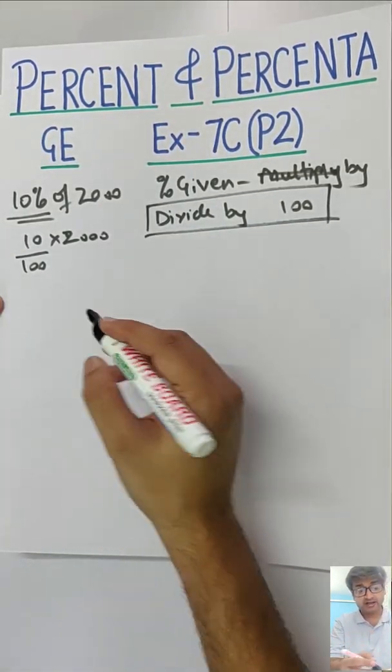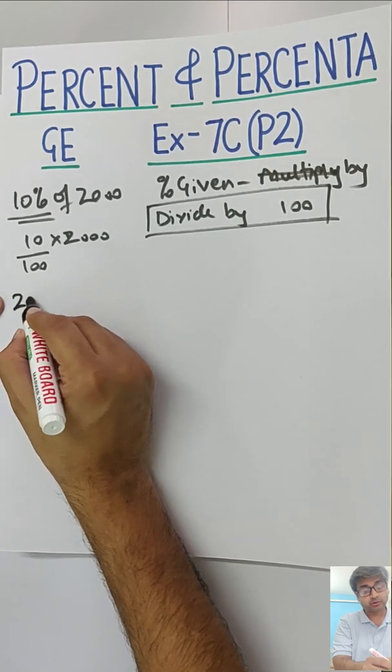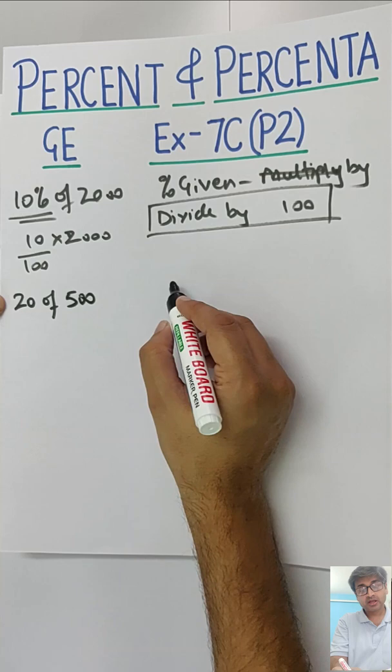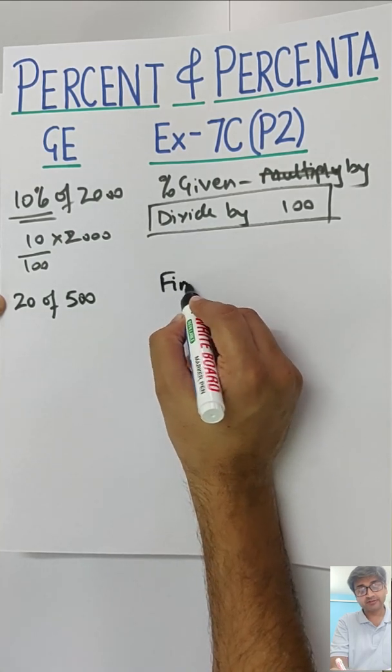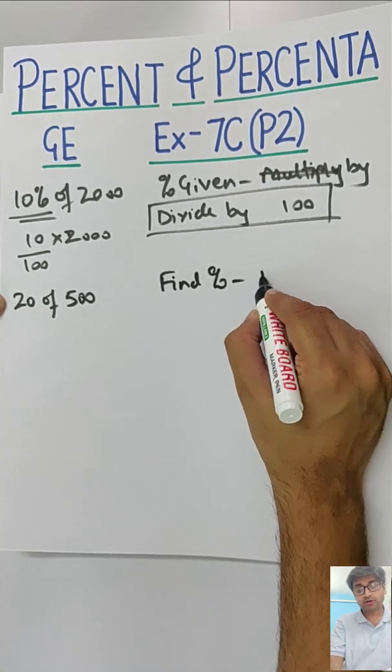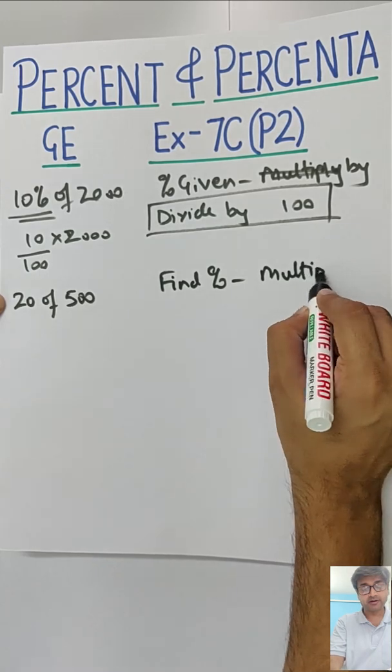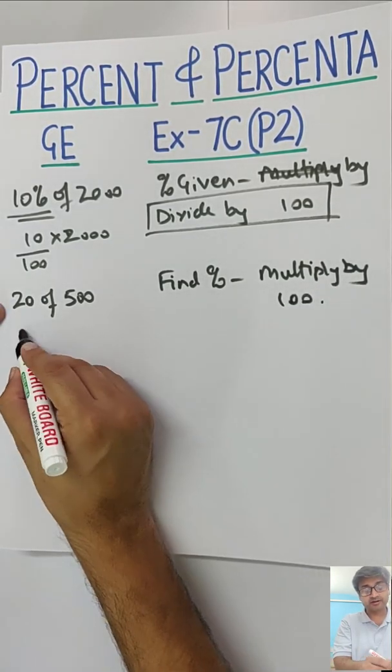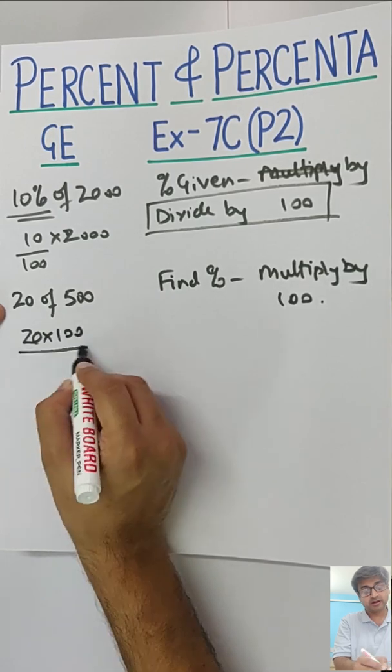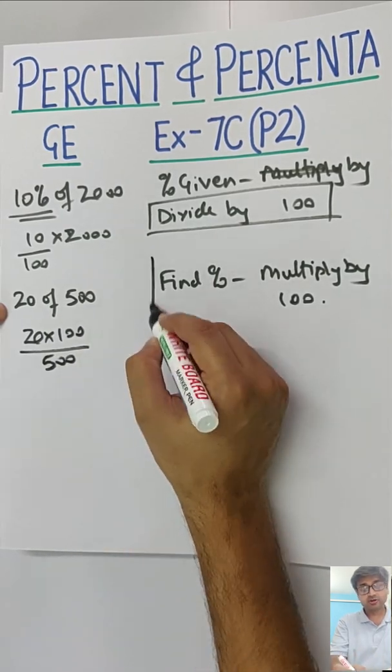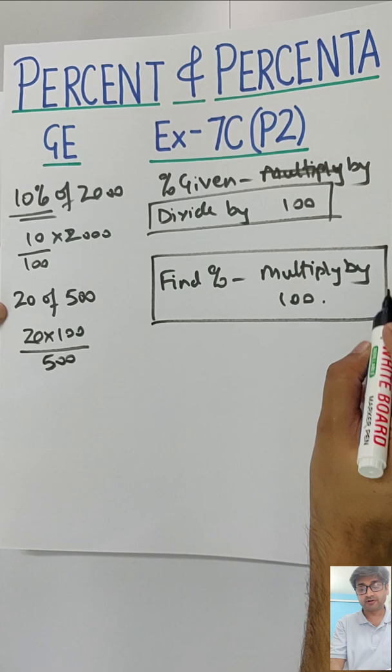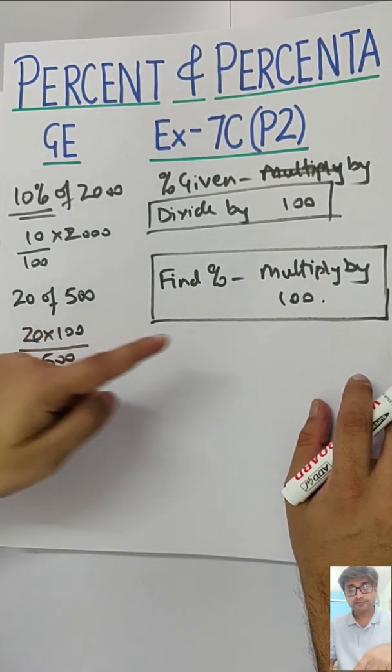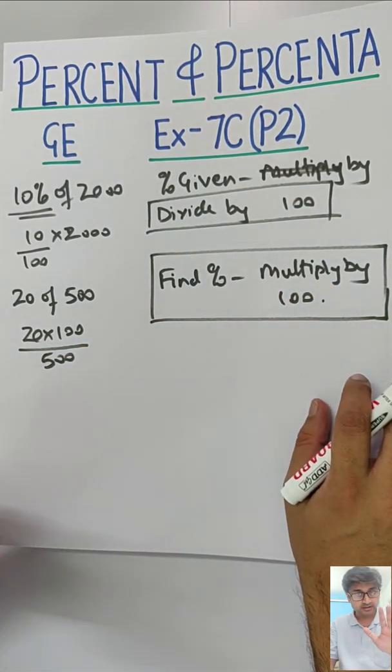Further, if you are finding percent, if you want to find 20 of 500, now you want to find percent, then what you do is multiply by 100. So 20 into 100 upon 500. Will we remember these two now forever? Percentage given, divide by 100. Percent to be found, multiply by 100.